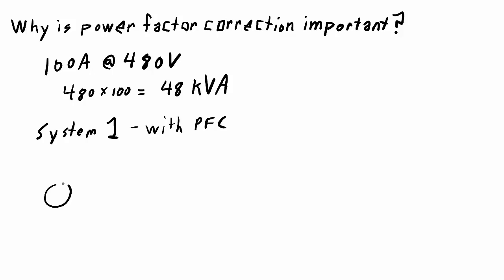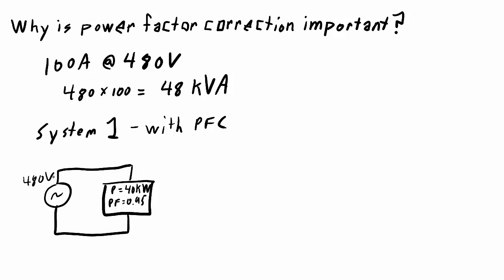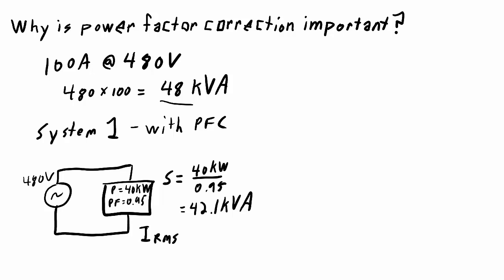In system 1, power factor correction is applied. It has a 480 volt source, the power is 40 kilowatts, and the power factor is 0.95. This tells me the apparent power being delivered is 40 kilowatts divided by 0.95, which equals 42.1 kVA. So in this system, the apparent power is less than what it's rated for, so this system is going to work. The RMS current is 42.1 kVA divided by 480 volts, giving a current of 83 amps.